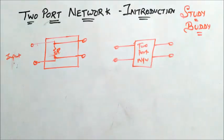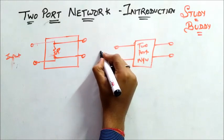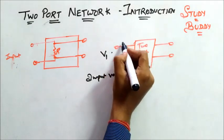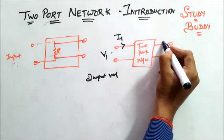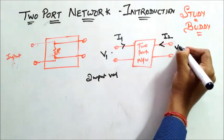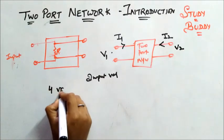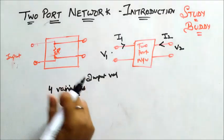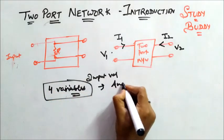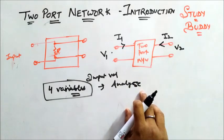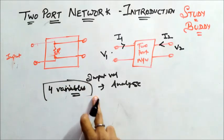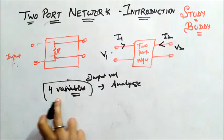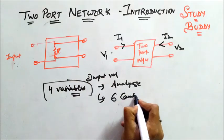For the analysis of a two port network, I have four variables: V1 (input voltage), I1 (input current), I2 (output current), and V2 (output voltage). Using only these four variables I can analyze any two port network. And from these four variables I get six combinations.